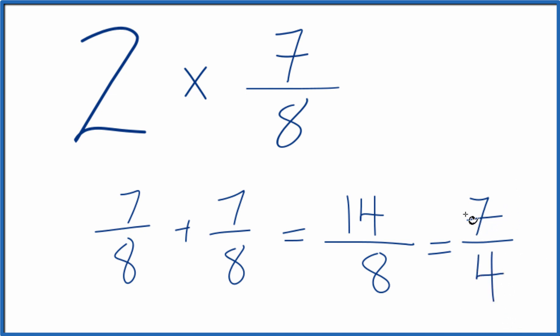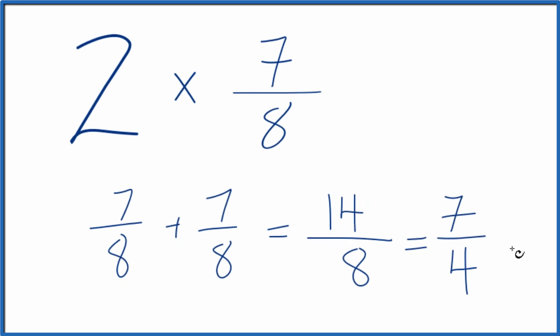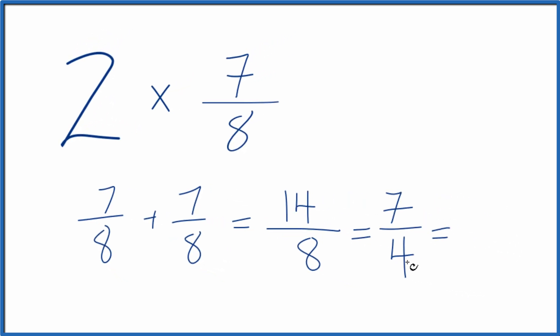This is an improper fraction. 7 is greater than 4. So let's convert it to a mixed number. 4 goes into 7 one time. 1 times 4 is 4. 3 left over. We bring the 4 across. So you could write 7 fourths as the mixed number 1 and 3 fourths.